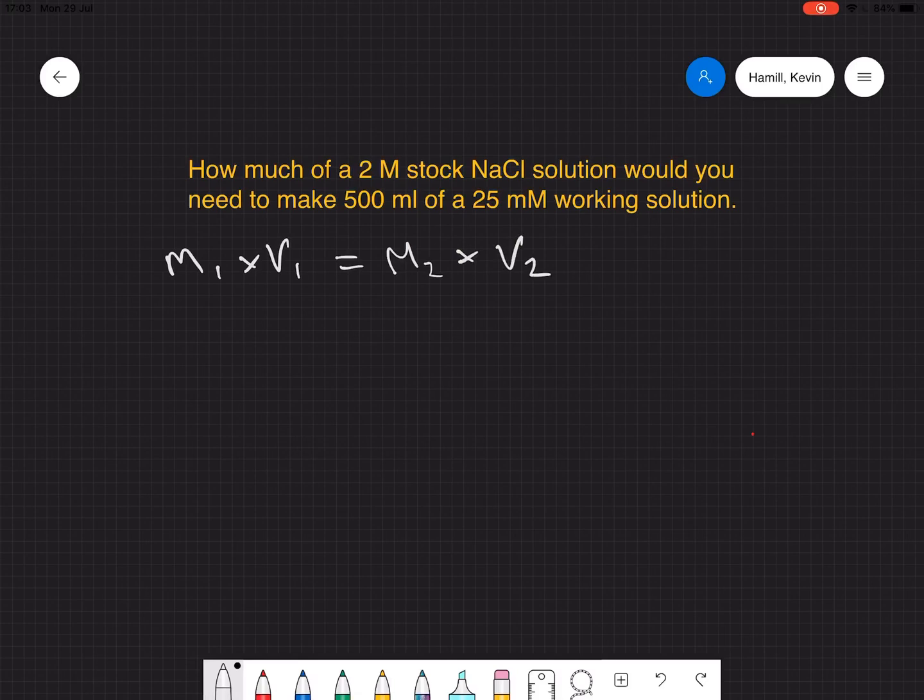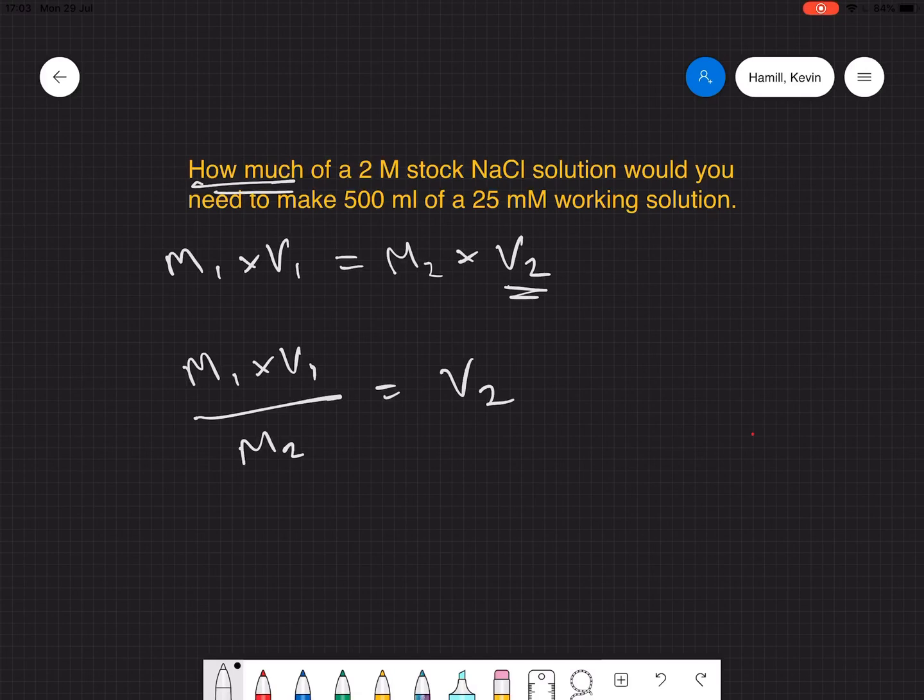In this case, we're asking a question of how much do we need. So we're going to calculate a volume. We just need to decide whether it's going to be V1 or V2. So let's make it V2 and then rearrange the equation. This is going to be molarity 1 times volume 1 divided by molarity 2 is equal to the volume that we need.